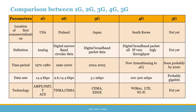The data rates each generation supports: 1G supports 14.4 kbps, 2G supports 9.6 to 14.4 kbps, 3G supports 3.1 Mbps, 4G supports 100 to 300 Mbps, and 5G would probably support speeds in gigabytes. The technology used: 1G used AMPS, NMT, or TACS; 2G used TDMA or CDMA; 3G used CDMA or EDGE; 4G used WiMAX, LTE, and Wi-Fi; and for 5G it has not yet been defined.